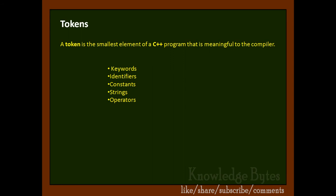Tokens are broadly classified under five categories: keywords, identifiers, constants, strings, and operators. We will discuss all these things gradually one by one.